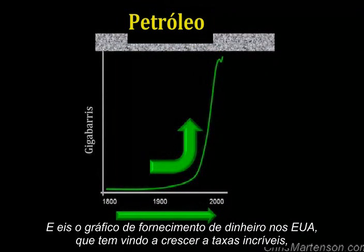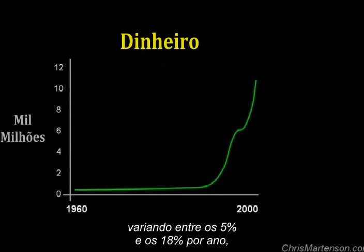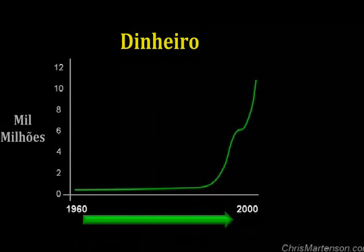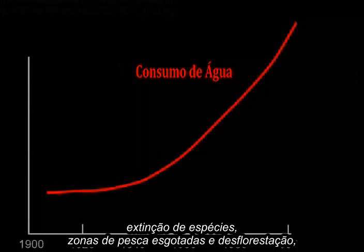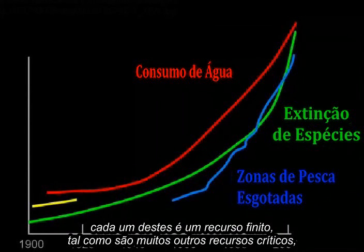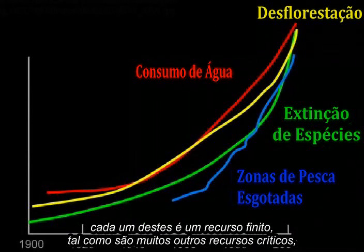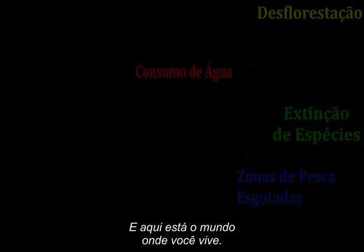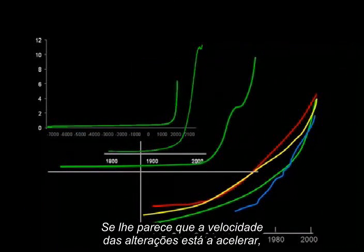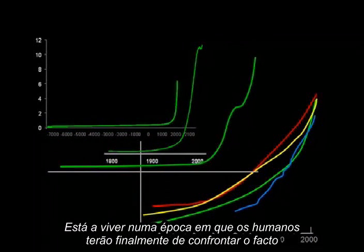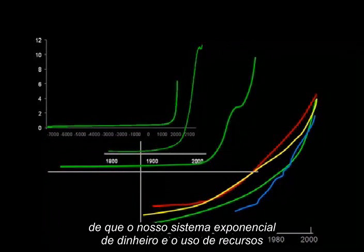And here's the U.S. money supply, which has been compounding at incredible rates ranging between 5 and 18% per year, so this chart only needs to be a few decades long to see this hockey stick effect. And here's worldwide water use, species extinction, fisheries exploited, and forest cover lost. Each one of these is a finite resource, as are many other critical resources, and quite a few are approaching their limits. And here is the world you live in — if it seems like the pace of change is speeding up, well, that's because it is. You happen to live at a time when humans will finally have to confront the fact that our exponential money system and resource use will encounter hard physical limits.